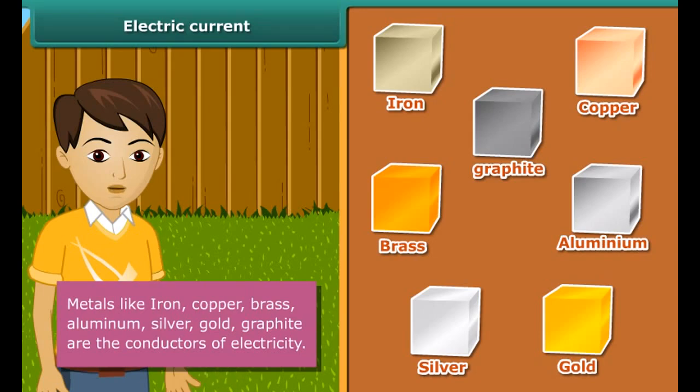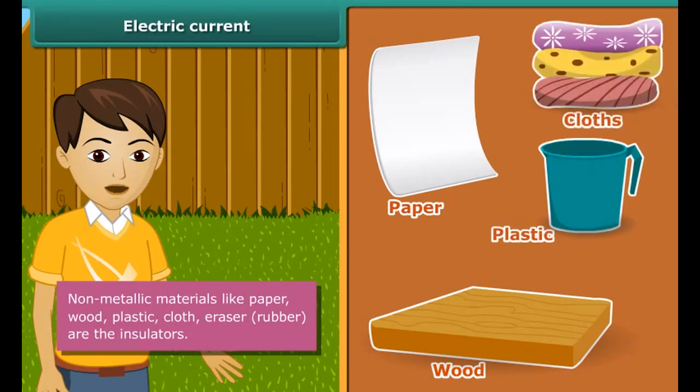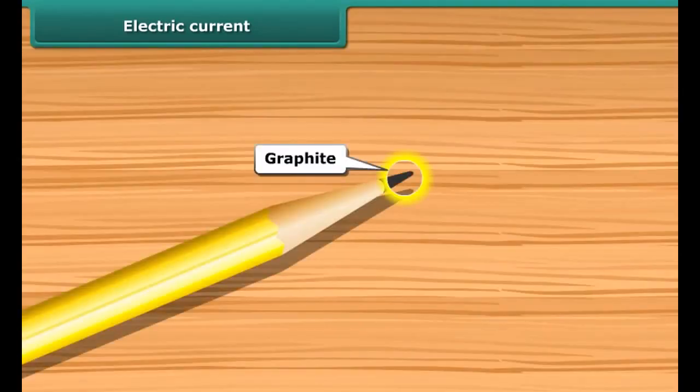Iron, copper, brass, aluminium, silver, gold, graphite, etc. are the conductors of electricity.